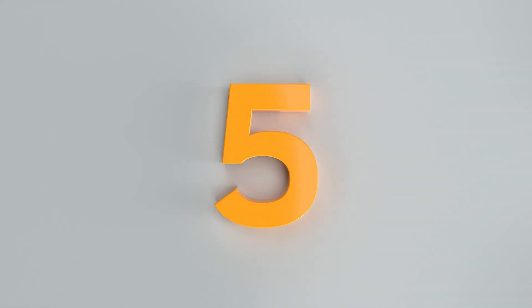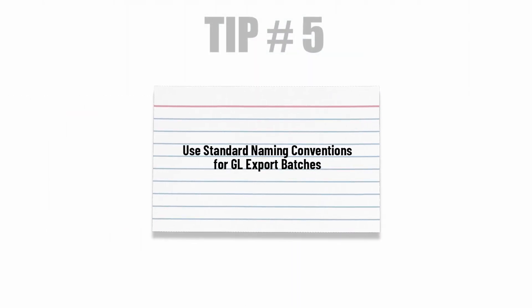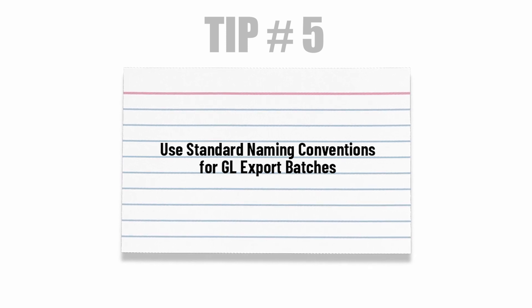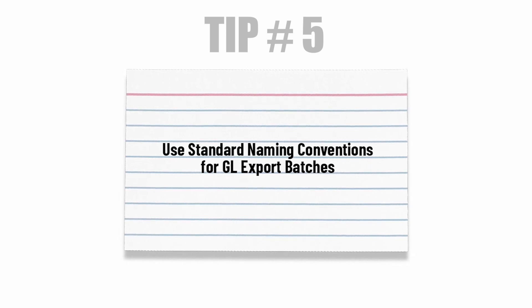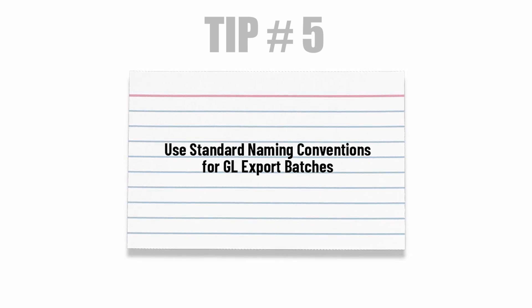Tip number 5: Use standard naming conventions for your GL export batches by creating a standard naming convention for all batches exported to QuickBooks Online. This will help identify batches intended for QuickBooks Online import.